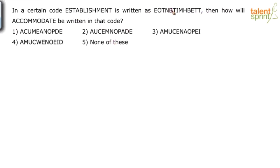So we need to first understand the logic behind this coding. How was establishment coded as whatever given here? So let us do one thing.